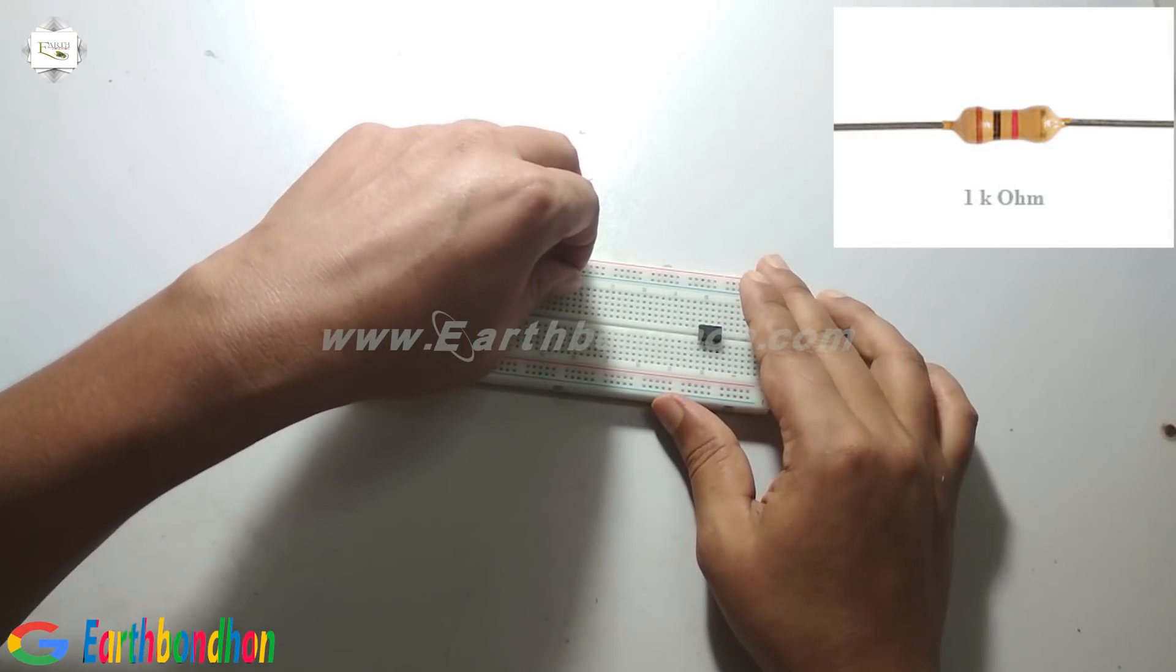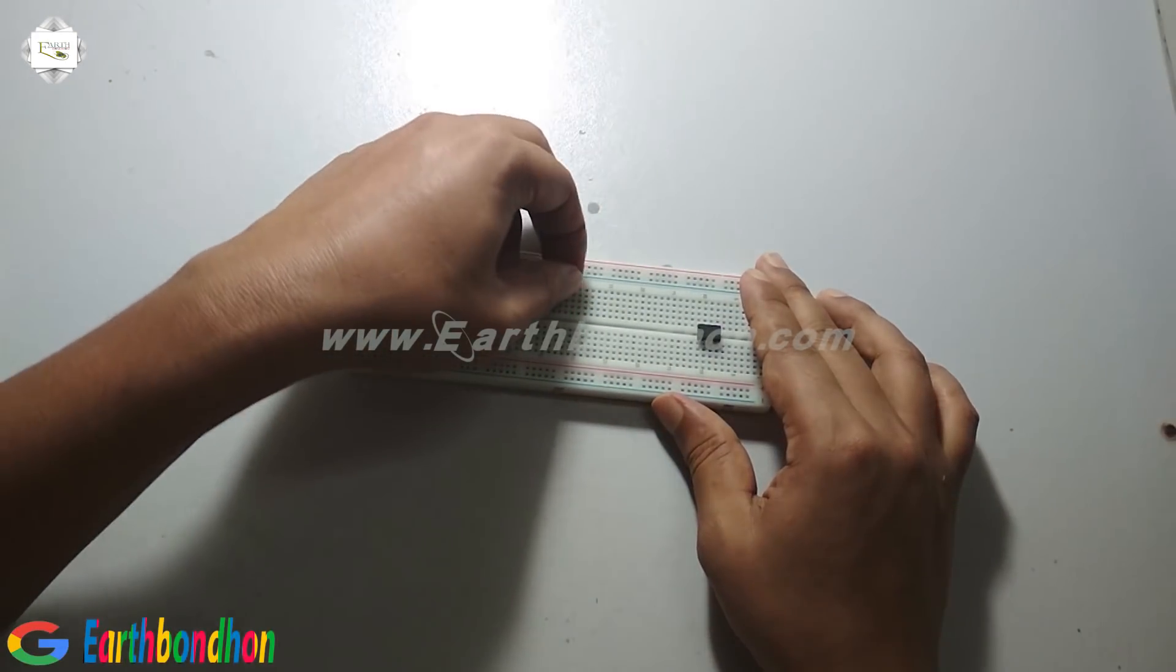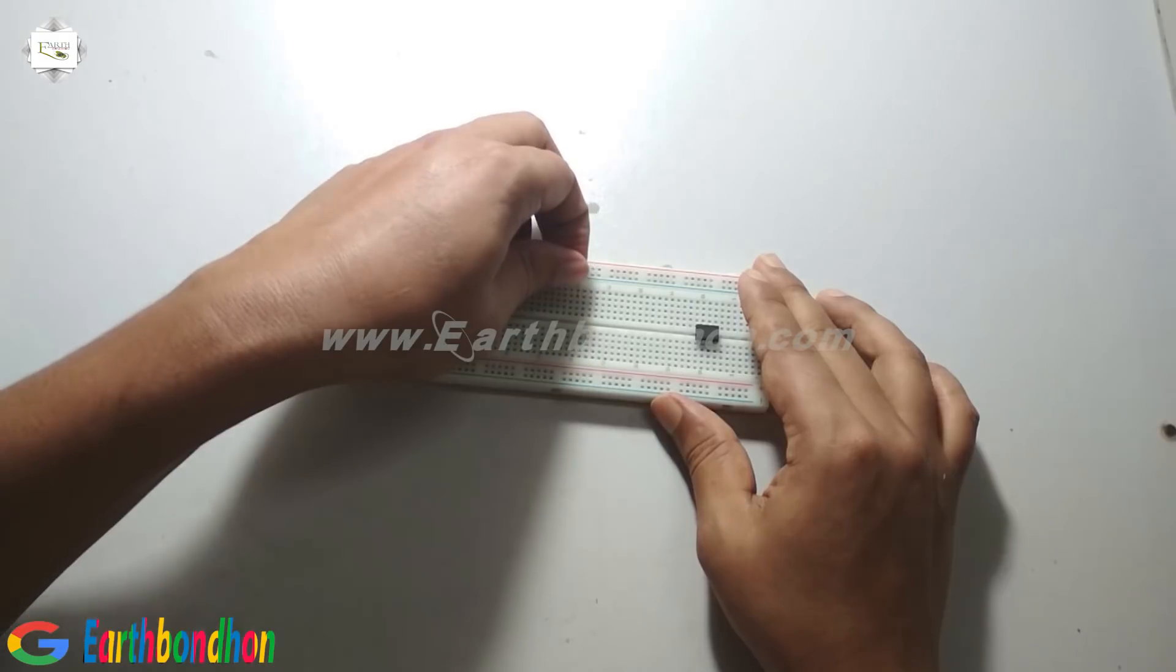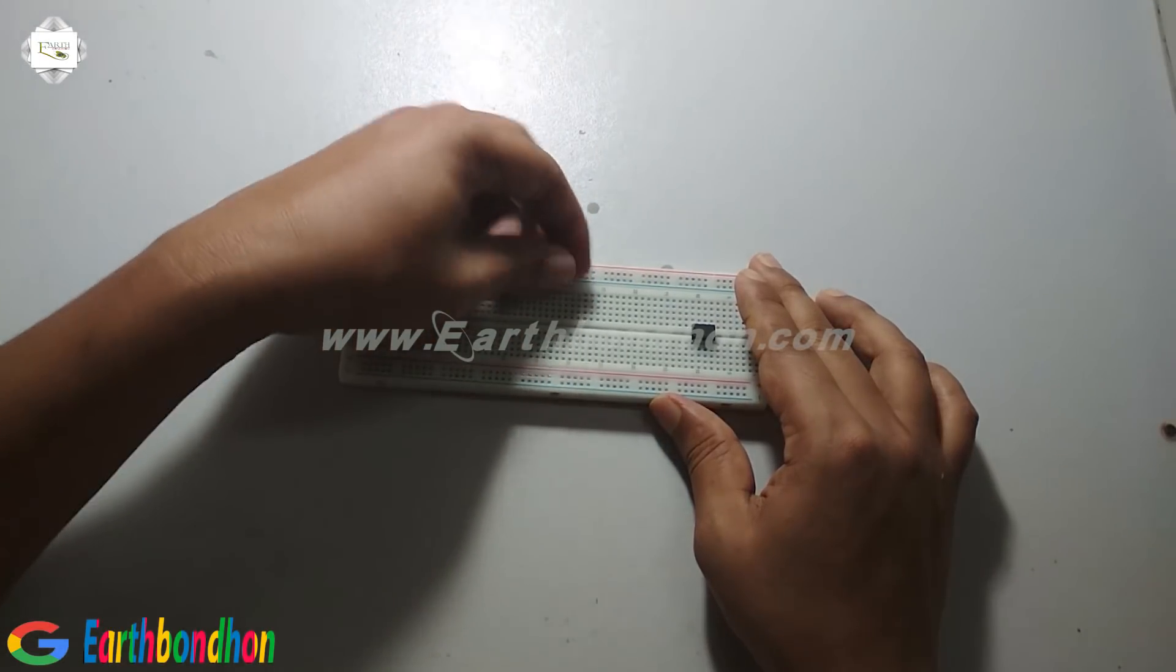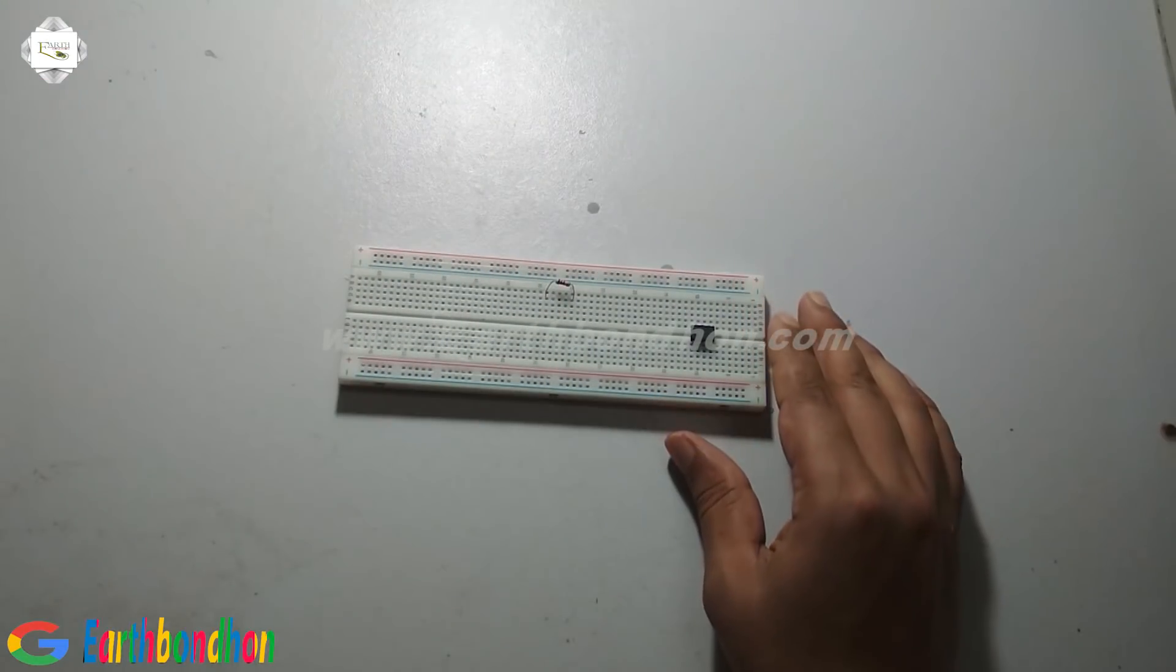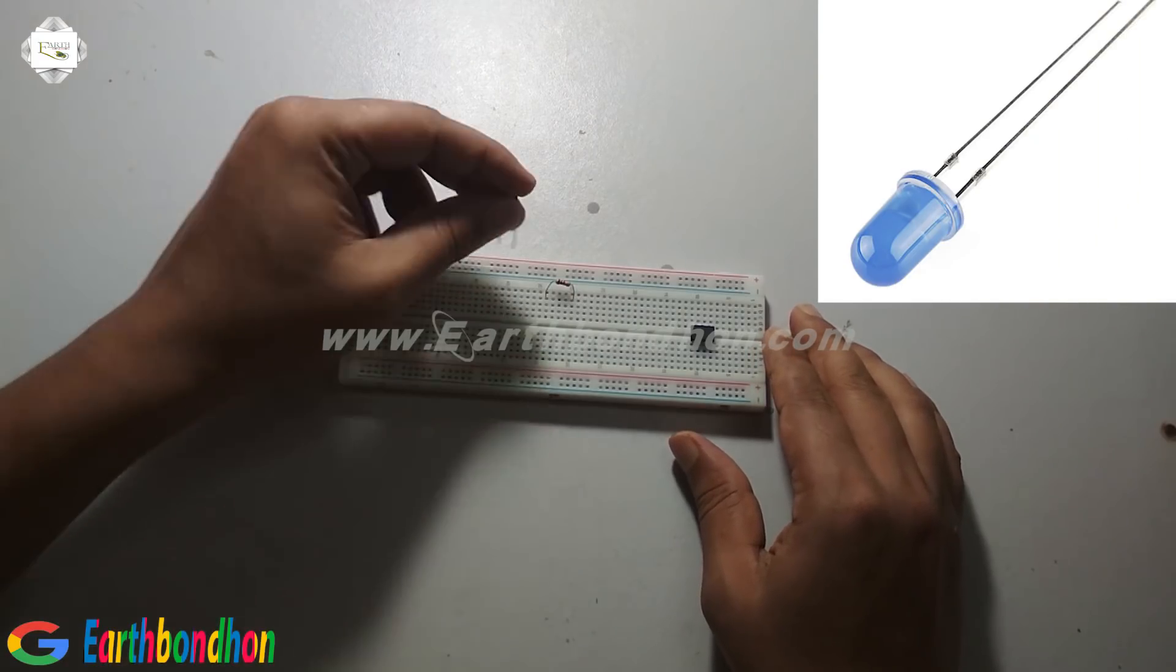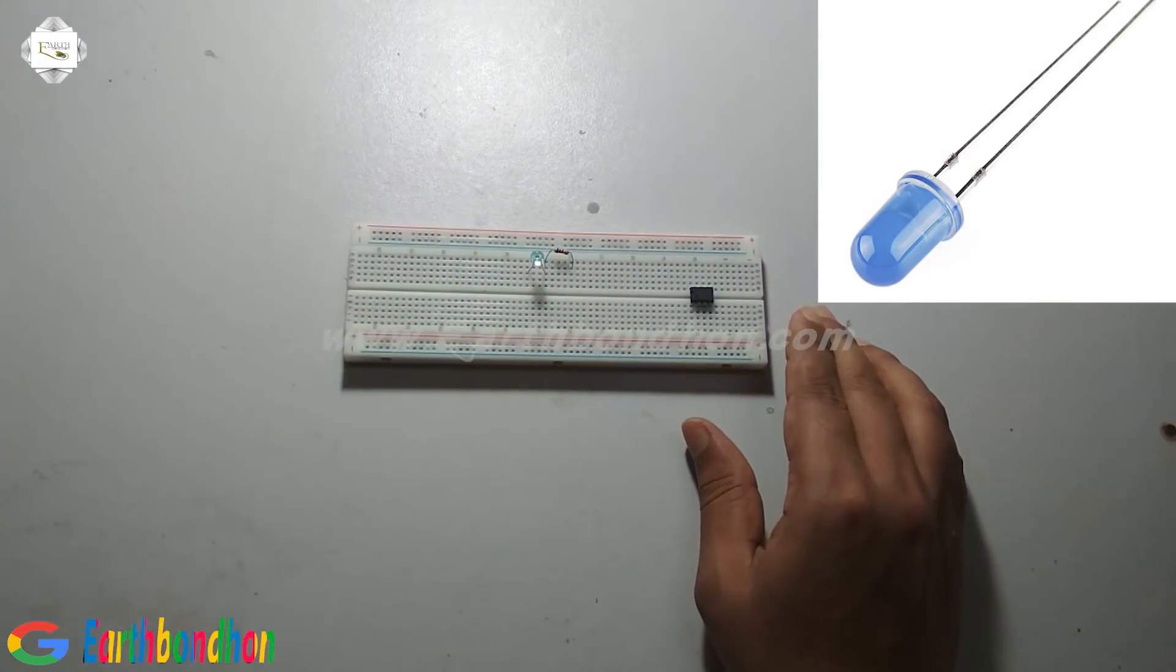This is a 1K resistor, and use an LED. This is the LED bulb.